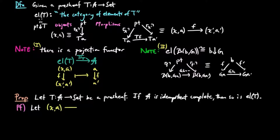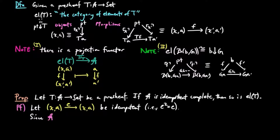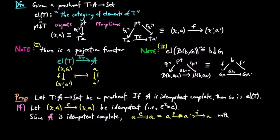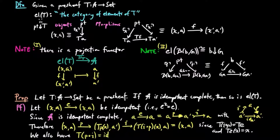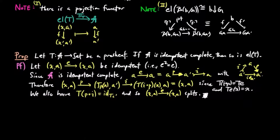For the proof, we let E be idempotent in the category of elements. We need to show that it splits in the category of elements of T. Since the category A is idempotent complete, the underlying A-morphism E splits as IP. Therefore, IP in the category of elements is equal to E, since T(IP) is equal to TE and TE(X) is equal to X by our assumption. We also have T(PI) equal to the identity on T, which shows that E splits as IP in the category of elements.